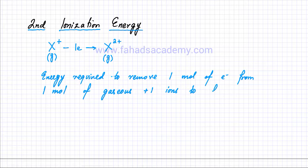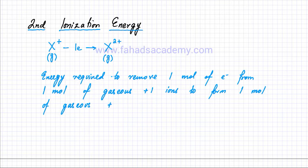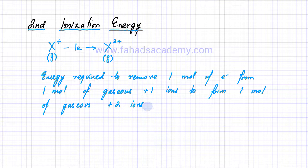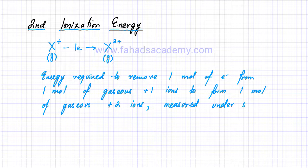The second ionization energy is the energy required to remove one mole of electrons from one mole of gaseous plus one ions, meaning the first ionization energy has already taken place and you're now removing the second electron. This is also measured under standard conditions.